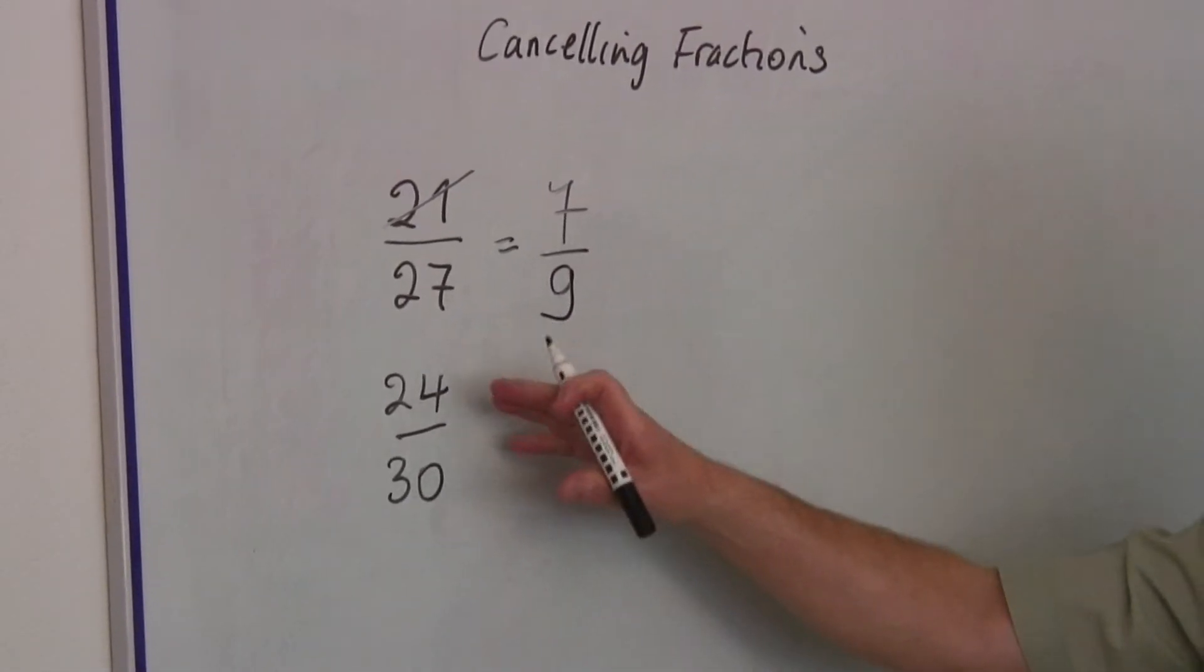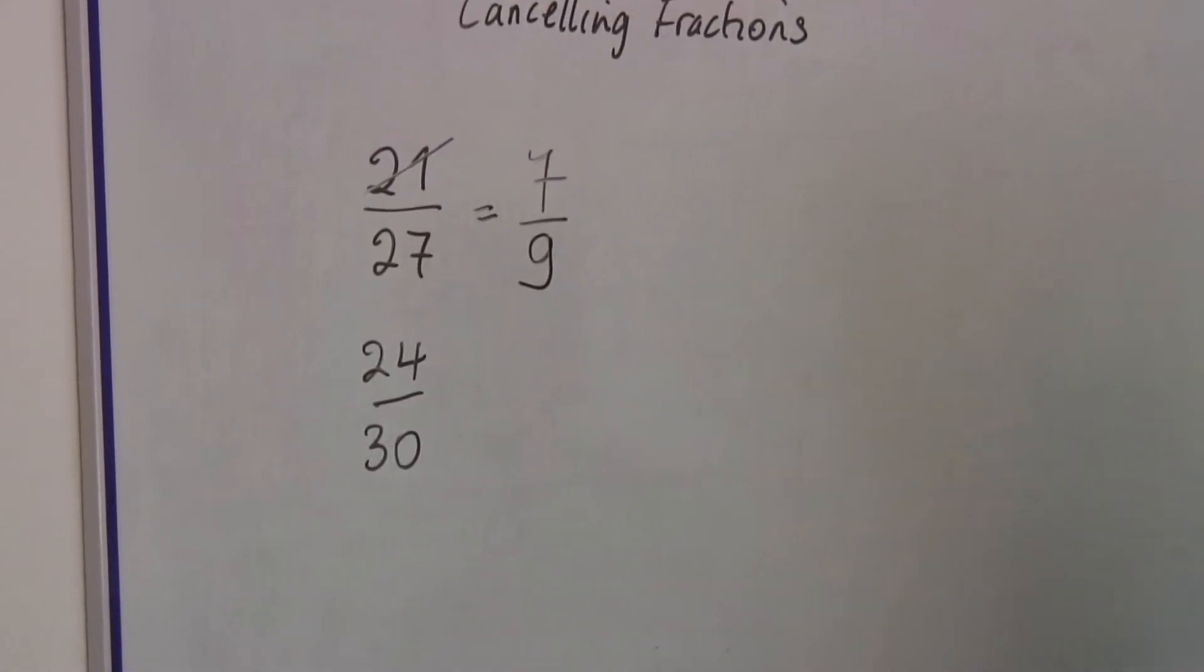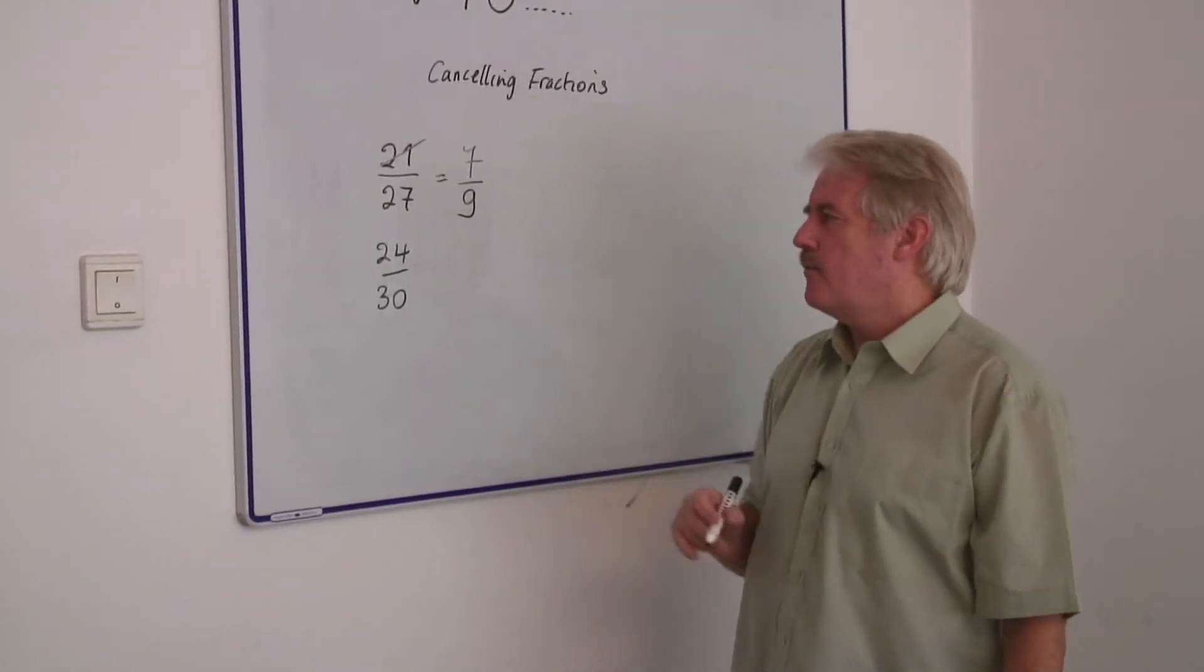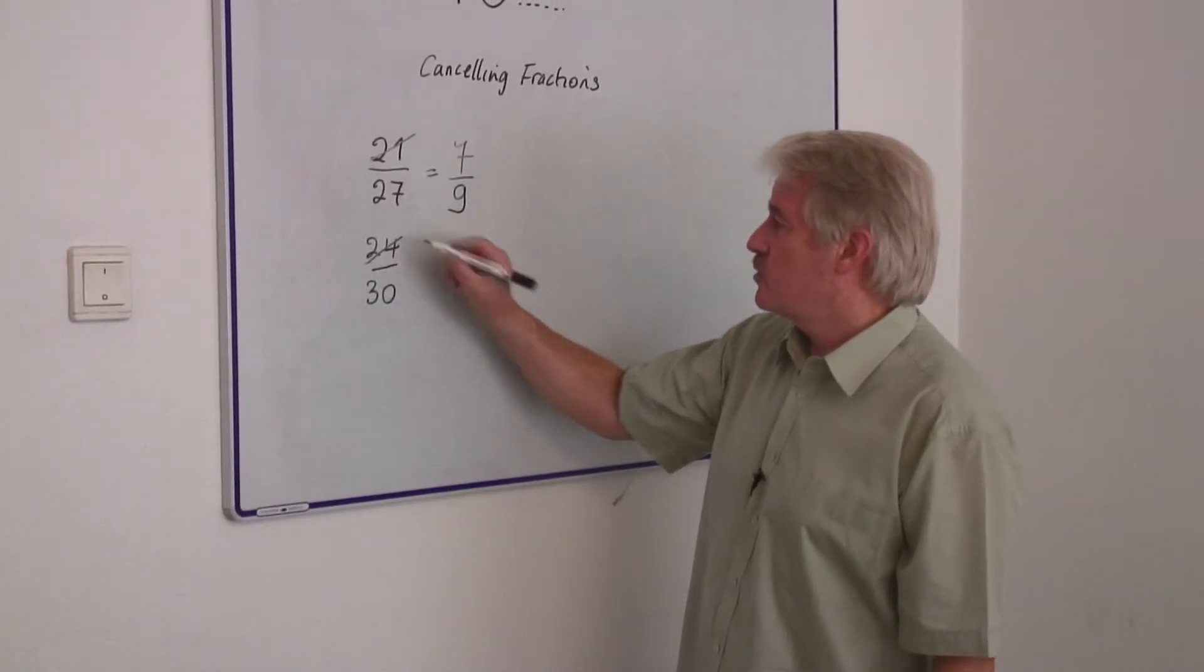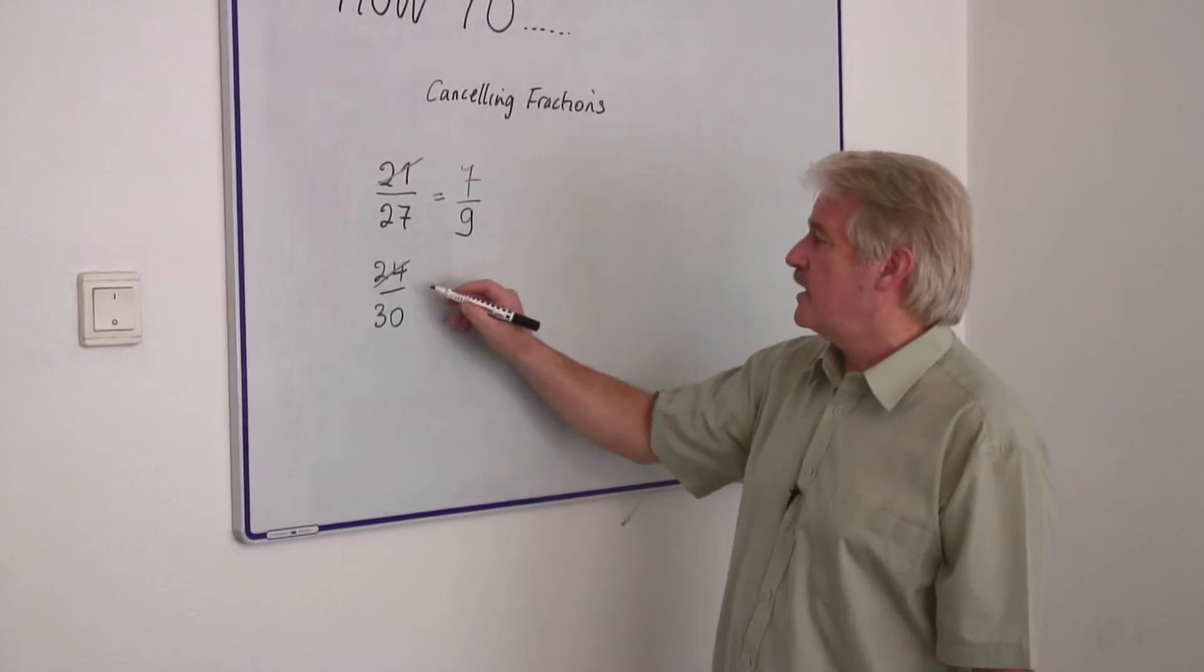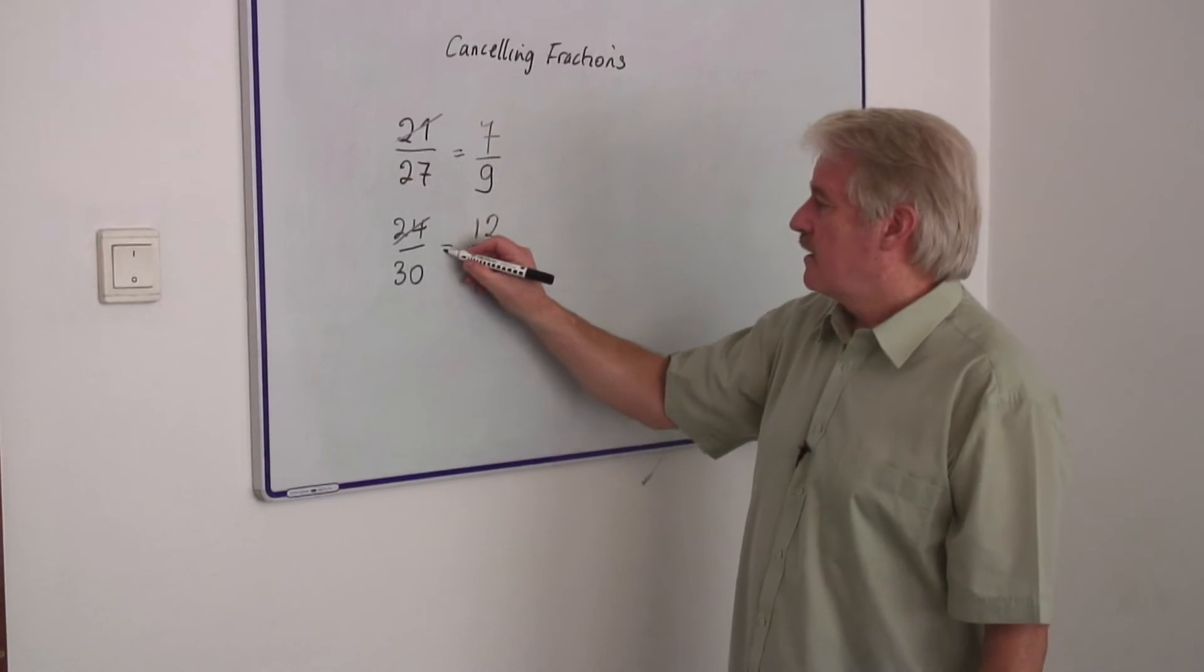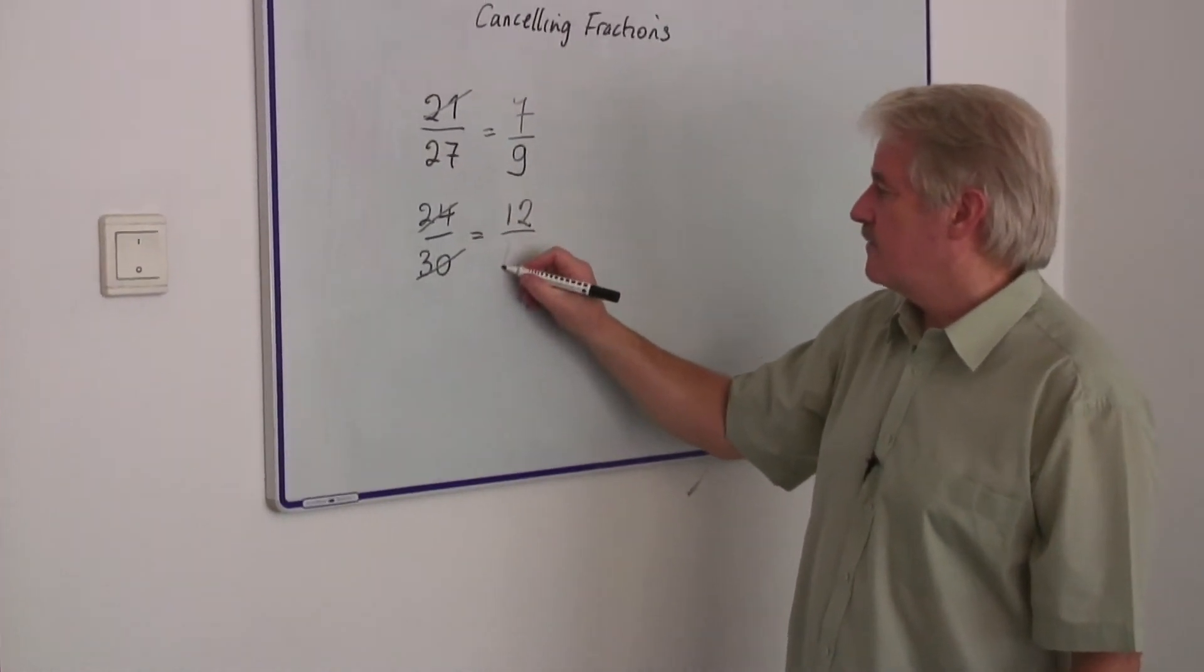I can do the same with this fraction, twenty-four over thirty. And the reason I've selected this is because we're looking for simplifications all the time. And it's very obvious, two even numbers, they must divide by two. So twenty-four divided by two will be twelve. And if I divide thirty by two as well, I'm going to get fifteen.